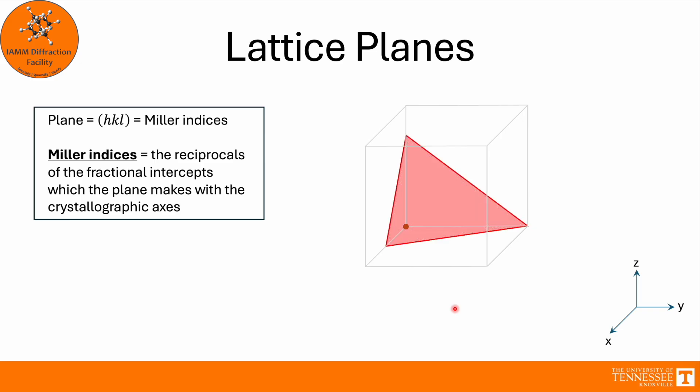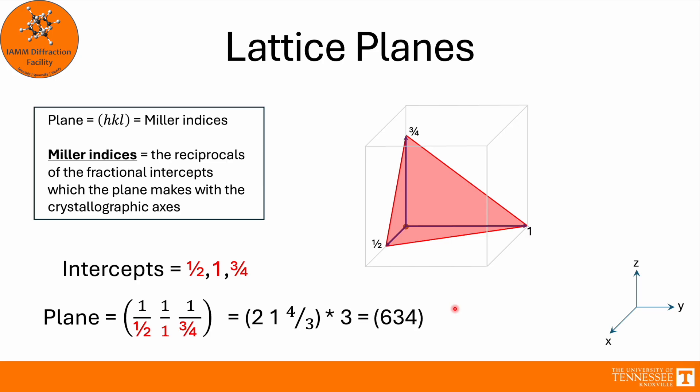Here we have one that's a little trickier. It crosses the x-axis at 1, y at 1, and z at 3/4. So there are our intercepts. We take the reciprocals, we get 1, 1, and 4/3. Now just like with directions, we do want all of our indices to be integers, so we need to multiply all indices by 3 in order to get the (6,3,4) plane.